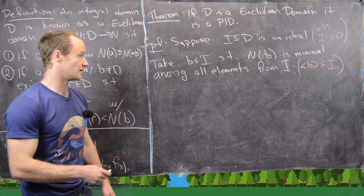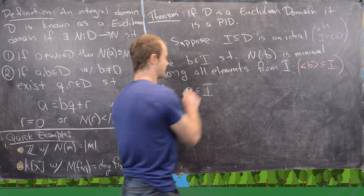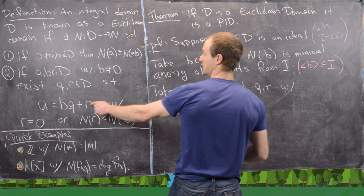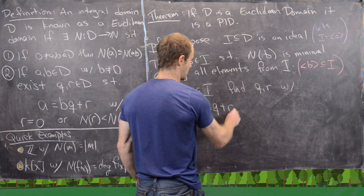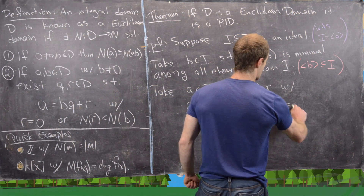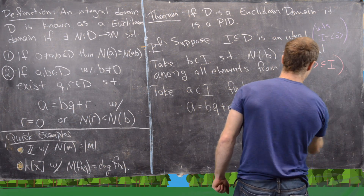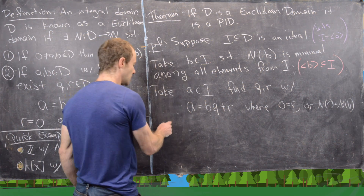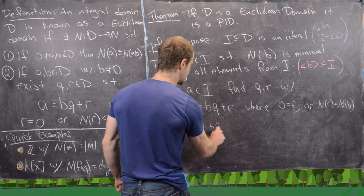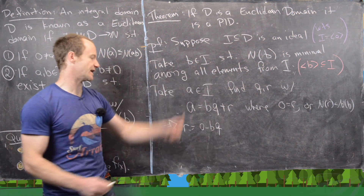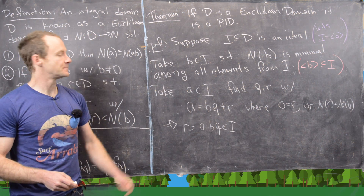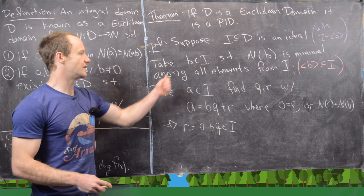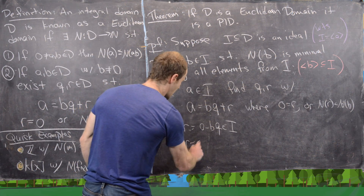Take an arbitrary element a from the ideal and apply the division algorithm: find Q and R such that a = bQ + R, where either R = 0 or N(R) < N(b). We want to show R must be zero. Notice R = a − bQ. Since a is in I and b is in I, R is also in I.